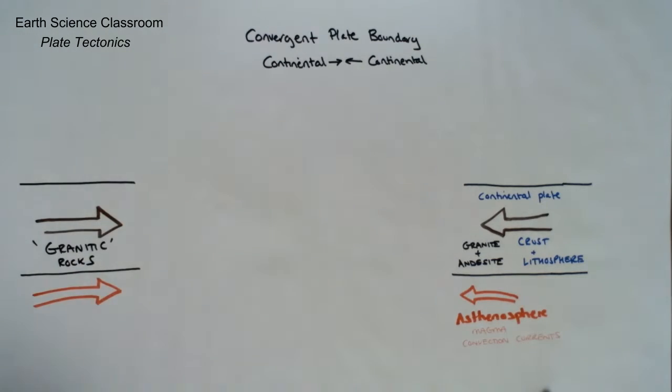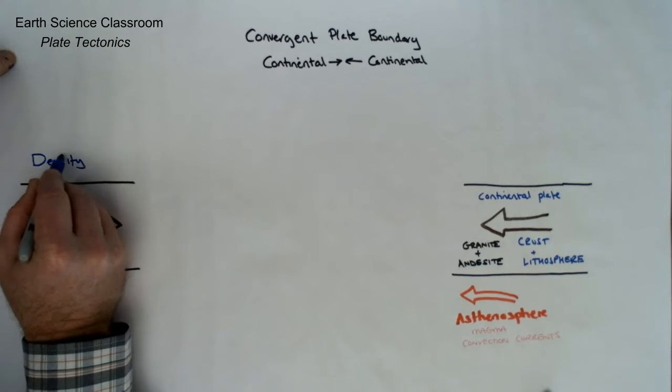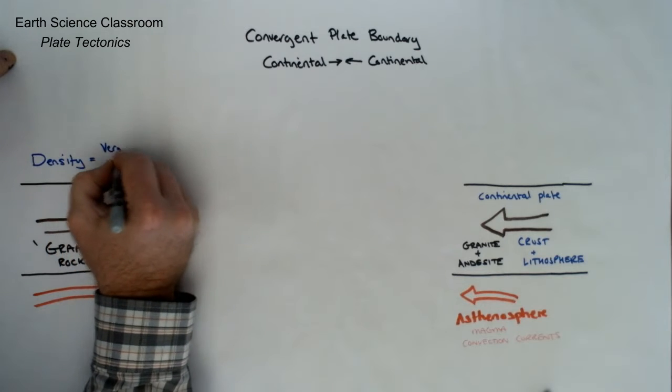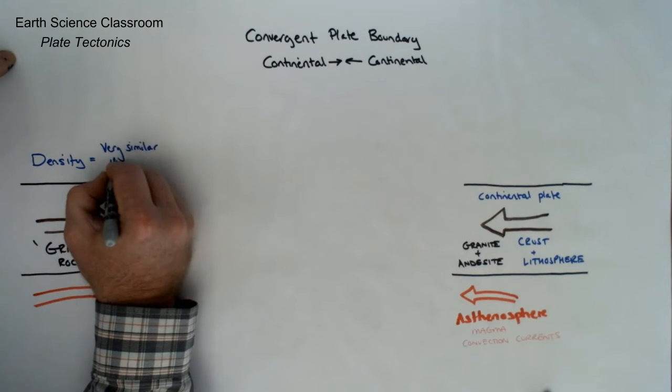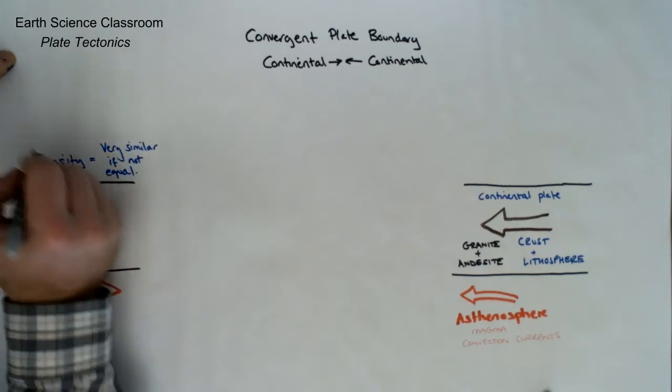Our continental plates are composed of mostly granitic rocks which is granite and andesite and variations of that, and the density is around 2.7 grams per centimeter cubed.